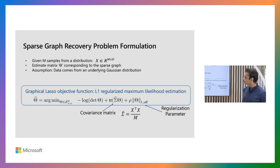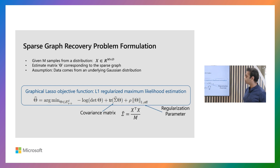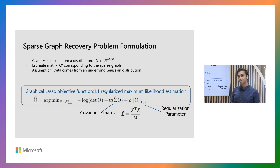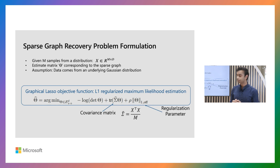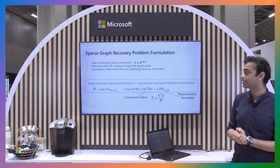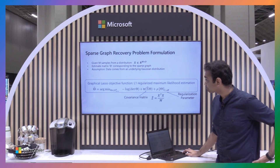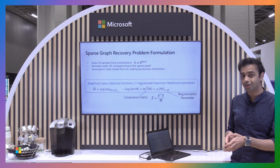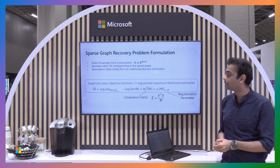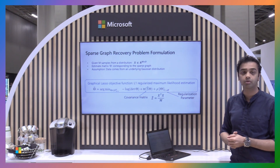How do we formulate this problem? We are given m samples with d features each, and we formulate it as a sparse graph recovery problem. We assume the underlying distribution is a multivariate Gaussian distribution, and our task is to estimate the precision matrix theta. If there is a zero in the precision matrix, that means those two variables are conditionally independent of each other. If you recover the precision matrix, you recover the underlying sparse graph connection between features. We introduce an L1 norm to get a sparse output graph. This is the graphical lasso formulation — one term fits the Gaussian distribution and the other is the L1 sparsity term.